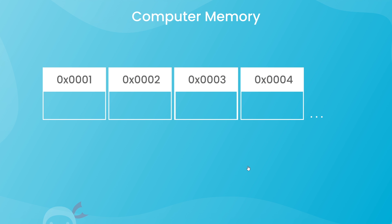To understand this more, let's talk about how variable values are stored in memory. Our computer memory is like a massive sequence of memory blocks, where each block can store a single value. Each block also has a unique memory address associated with it, and our computer can use that address to read or write values to that block. When we create a variable — for example, called age — we store its value in one of these blocks, and the variable name acts as a label for that block and memory address.